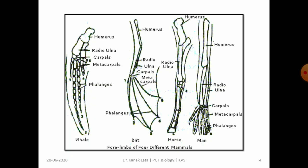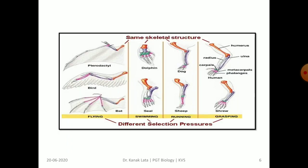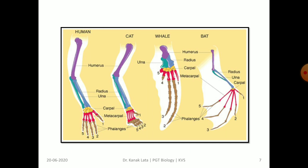This figure shows the forelimbs of four different mammals: whale, bat, horse, and man. This is also a figure of forelimbs of human, whale, dog, and bat. Here it is shown that the same skeletal structure is present in the forelimbs of different mammals. This is also about the forelimbs of human, cat, whale, and bat, showing their evolutionary relationship.